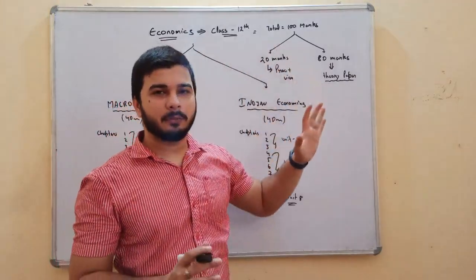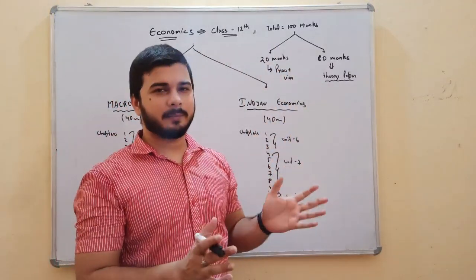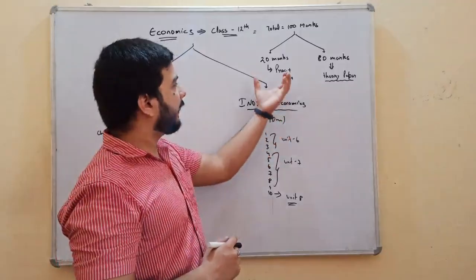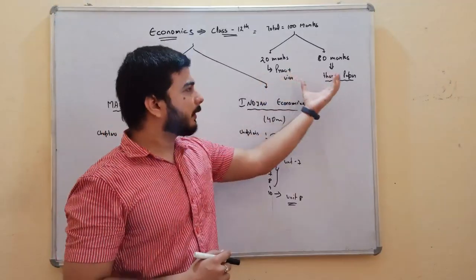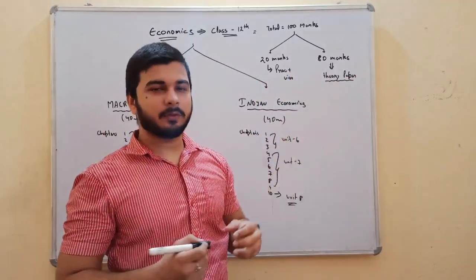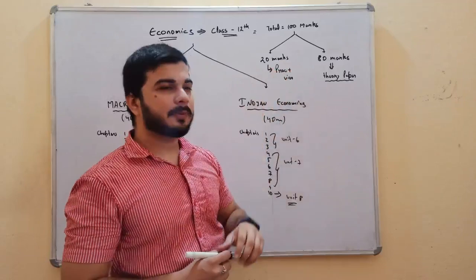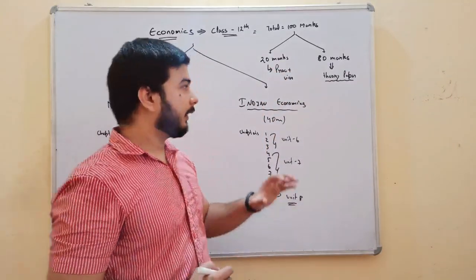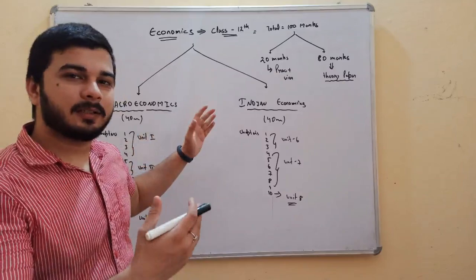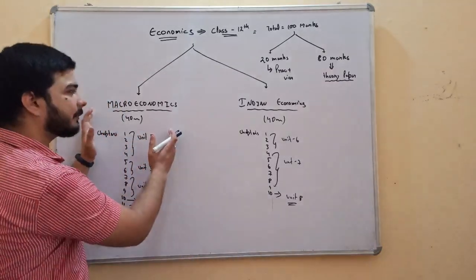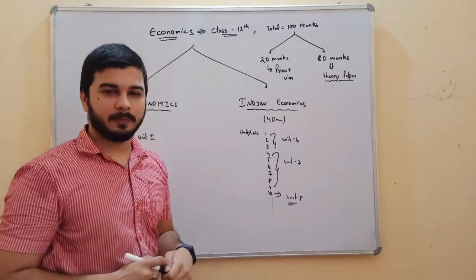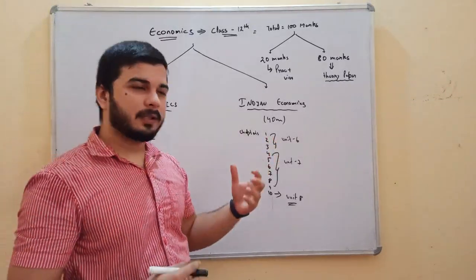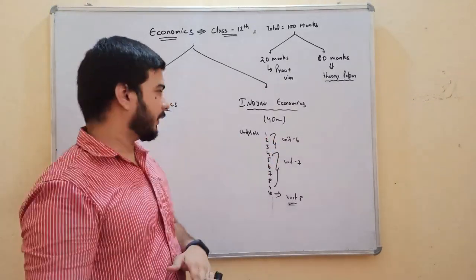Now, in class 12, the total of your theory paper is 100 marks, which is divided into 20 marks and 80 marks. In the 80 marks, you have to give a written theory paper exam for 3 hours. And in the 20 marks, you will have to complete practical work to get those marks. Now, within the 80 marks, there are two parts: macroeconomics and Indian economics, each worth 40 marks.